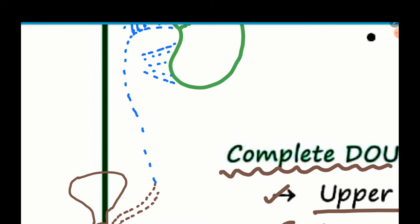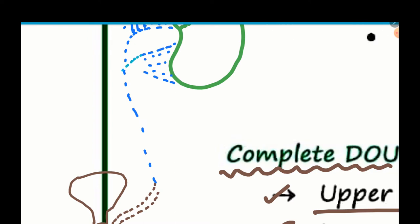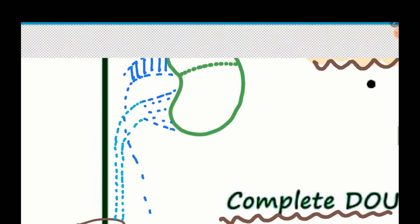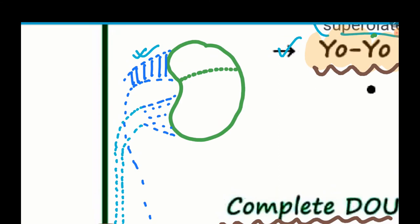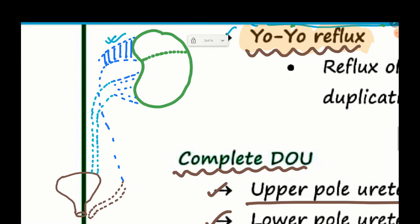What happens to the lower ureter? It will come down and drain into the normal location in the bladder trigone. The lower ureter normally ends in the bladder trigone, but the superior ureter drains in a location away from the bladder trigone. This is the Weigert-Meyer rule.